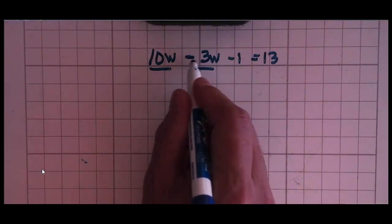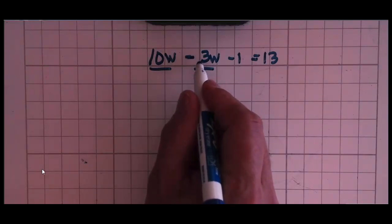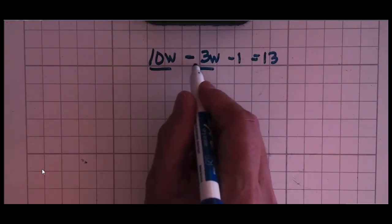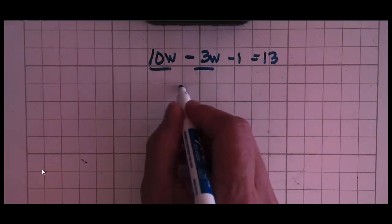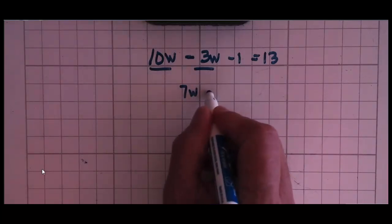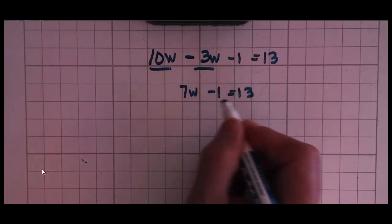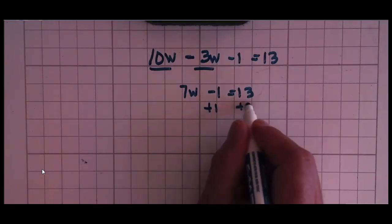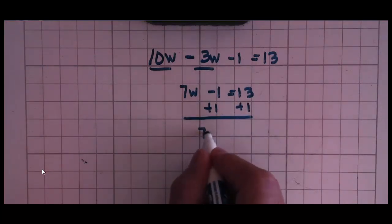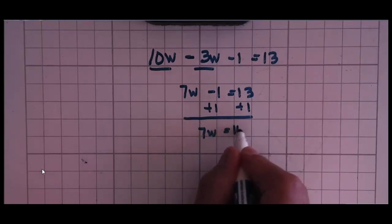So the negative stays with the 3. A lot of people are confused about when is it subtraction and when is it negative. It's exactly the same thing, so this is negative 3 or 10w - 3w. In any case, when we combine these two we get 7w. Now it becomes a very simple equation to solve. The opposite of subtraction is addition, so we're going to add 1 to both sides and we get 7w = 14.